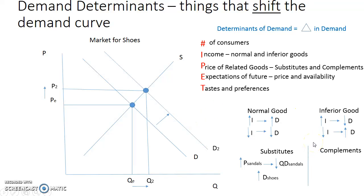Complementary goods are goods that are used together. If there's an increase in the price of peanut butter, what's the complementary good? Jelly. The law of demand tells us if the price of peanut butter goes up, the quantity demanded for peanut butter goes down. And if these are goods used together, then if I'm going to use less peanut butter, I will also demand less jelly.